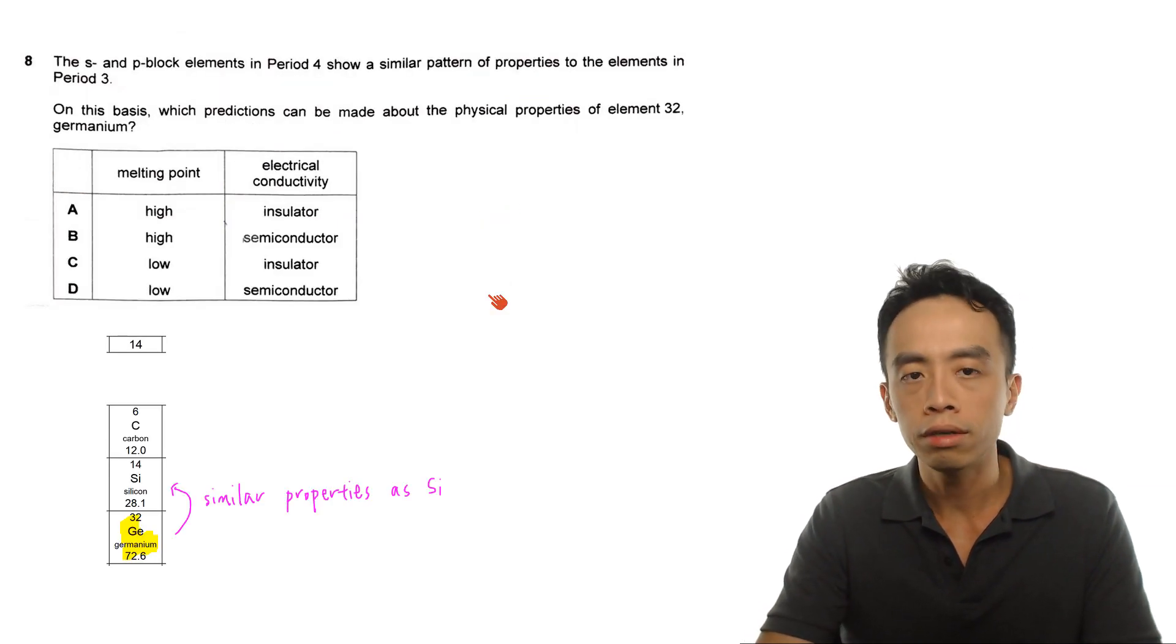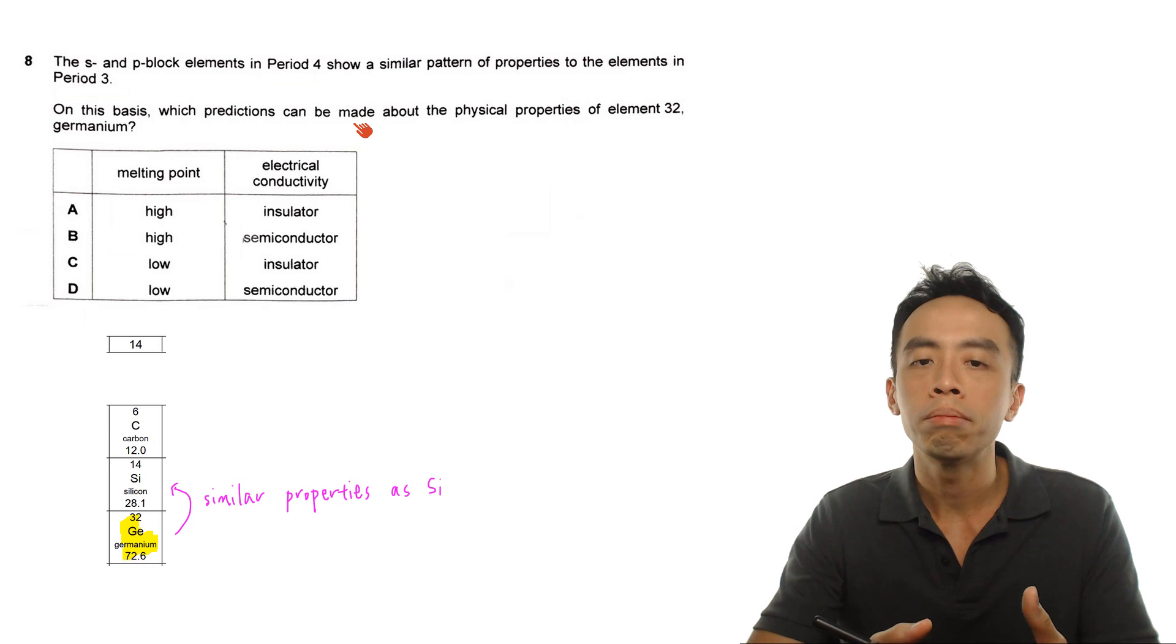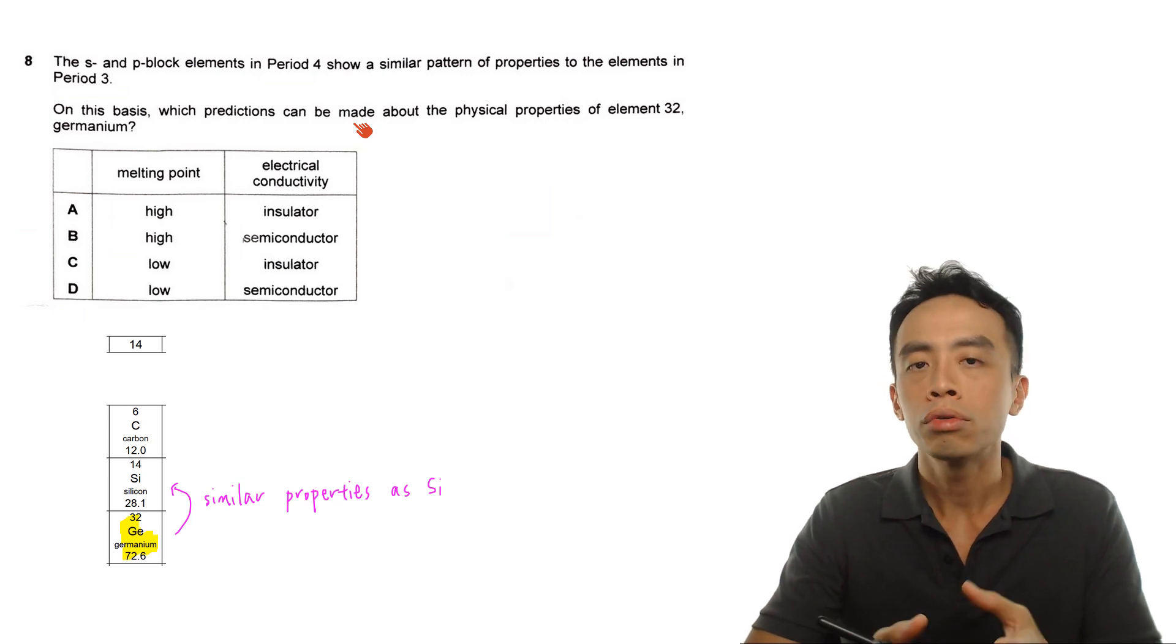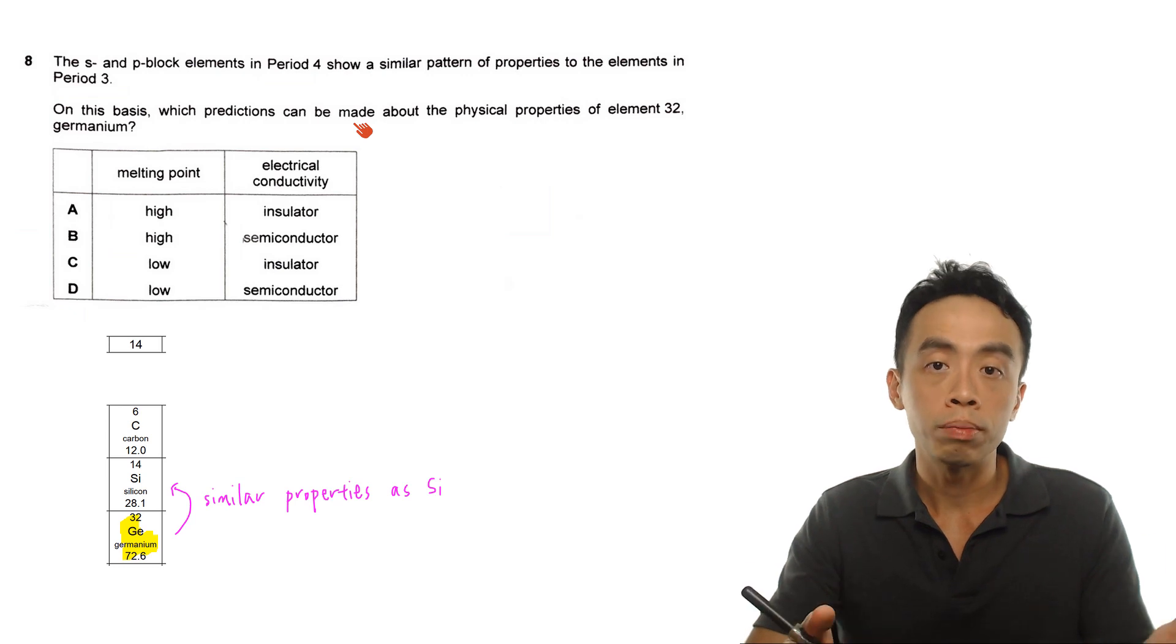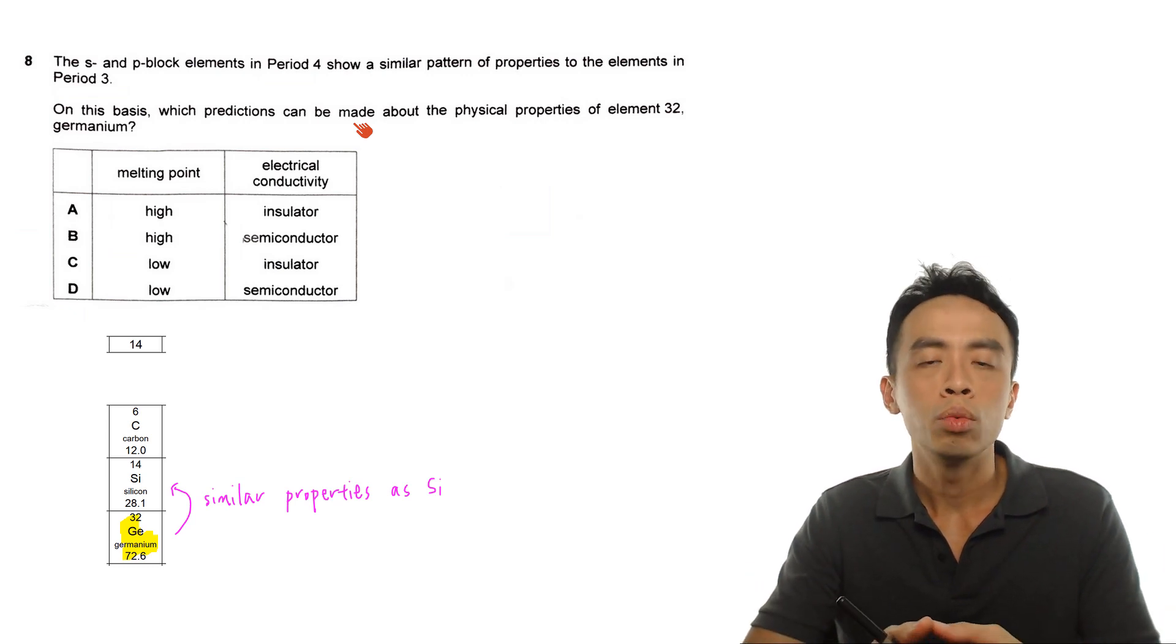In fact, this idea is reinforced here. The question already mentioned that the elements in period 4 and period 3 have similar patterns of properties. So effectively, this is a periodicity question, because under the topic of periodicity, we focus on period 3 elements.